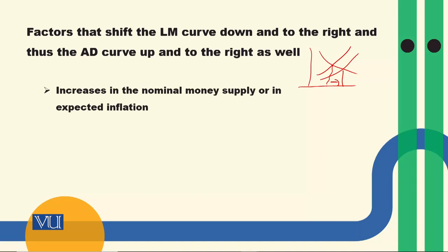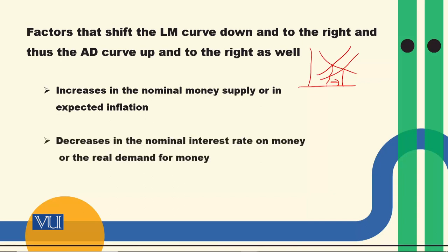So کون سی وجوہات ہیں جو LM curve کو downward shift کریں گی? Increase in the nominal money supply — LM curve کیا تھا? Equilibrium of the money market, meaning equality of money demand and money supply. Nominal money supply increase ہونے سے LM curve rightward shift ہوگا. Expected inflation جب بڑھے گا تو لوگ money سے non-monetary assets پر shift ہو جاتے ہیں، money demand کم کر دیتے ہیں. Decrease in the nominal interest rate on money — money deposits پر interest rate کم ہو تو money demand میں کمی آئے گی. یہ وہ factors ہیں جو LM curve کو rightward shift کرتے ہیں اور اس سے aggregate demand curve بھی change ہو جاتا ہے.